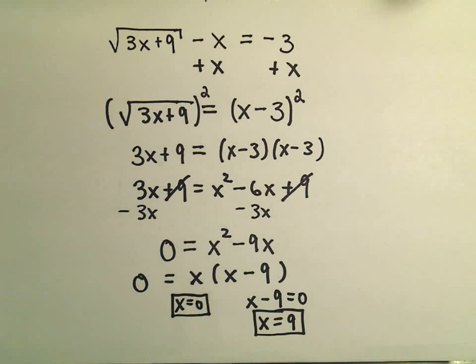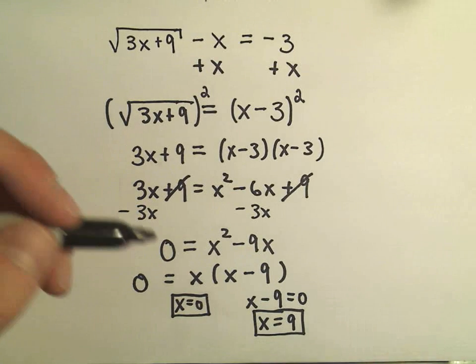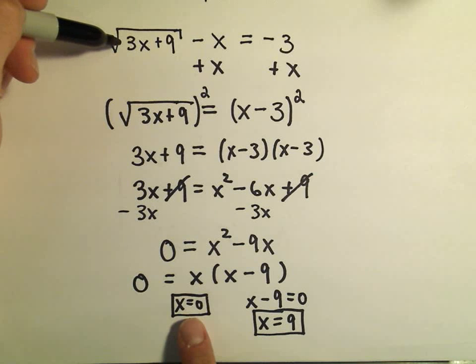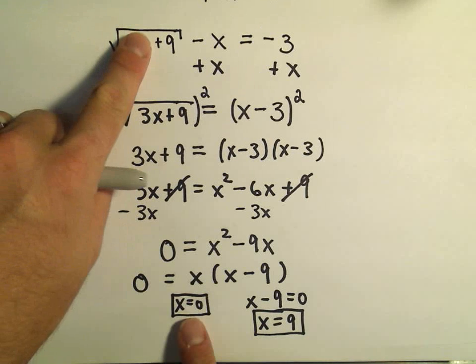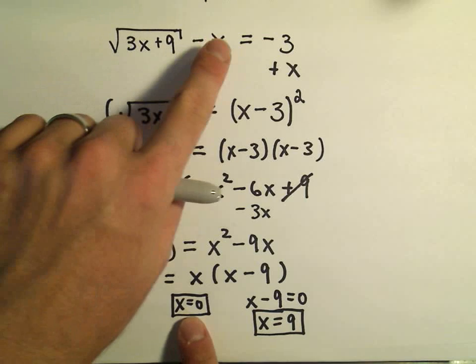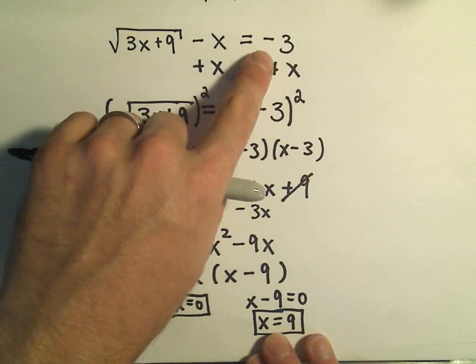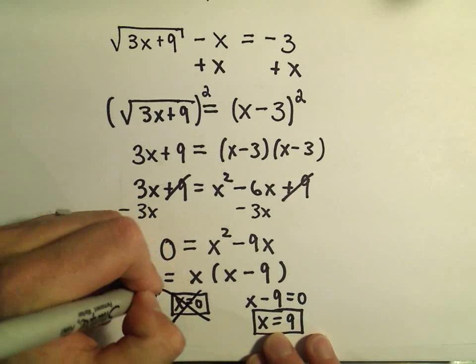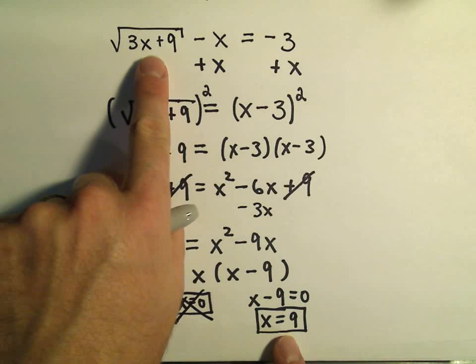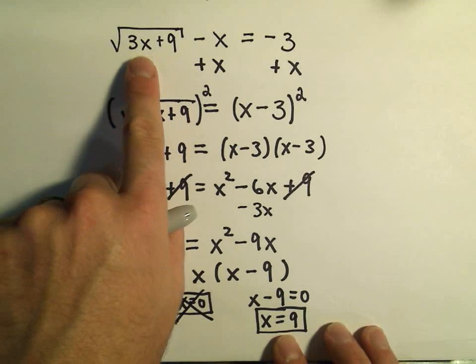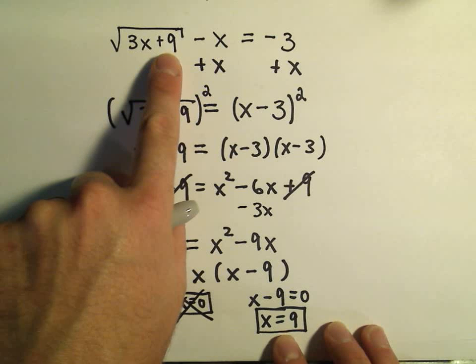I should say potential solutions. Again you always need to go back and check. Notice if you plug 0 into the original equation we'll just have the square root of 9 which is 3 minus 0. That would give us 3 but 3 is not equal to negative 3 so that solution doesn't work. Notice if we plug 9 in we would get 3 times 9 which is 27 plus 9 is going to be 36.